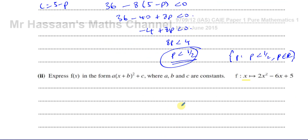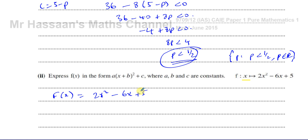For part 2, it says express f(x) in the form a(x + b)² + c, where a, b, and c are constants. We know f(x) = 2x² − 6x + 5, and we want to express it in that form — so we're going to complete the square.